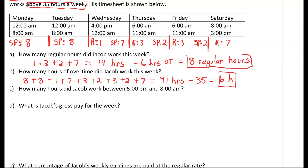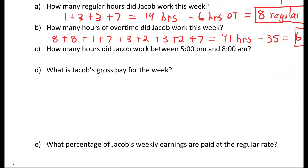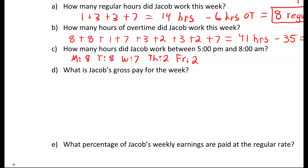So we have 6 overtime hours and 8 regular hours. The rest fall into shift premium hours, which we address in part C. The hours between 5 p.m. and 8 a.m. were: Monday 8, Tuesday 8, Wednesday 7, Thursday 2, Friday 2, Saturday 0 — giving us a total of 27 shift premium hours.